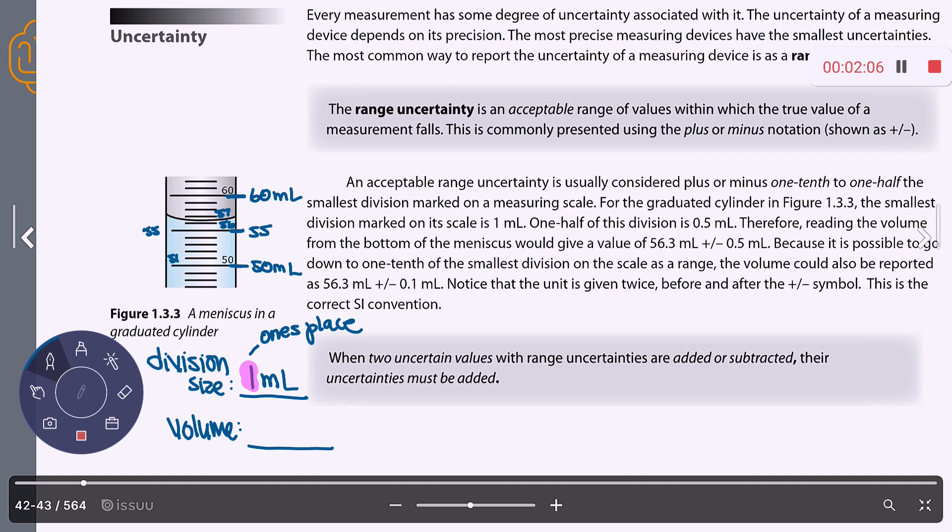So for you in this class, your volumes will always fall on the division or halfway between, never anything else. So this falls exactly halfway between, so I'm going to write 56 and then I'm going to put a 0.5 after because I was halfway between those two divisions.